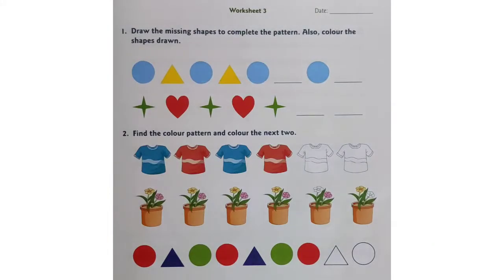All of you open page number 41, children. Write today's date. Let us begin with worksheet 3. Here, the first heading we have is: draw the missing shapes to complete the pattern. Also, colour the shapes drawn.